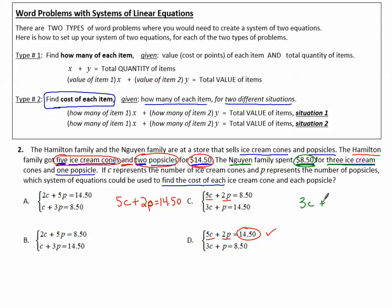And remember, that total was $8.50. Well, notice our other equation represents 3C + 1P for $8.50. So now I know for sure that D is my correct choice.